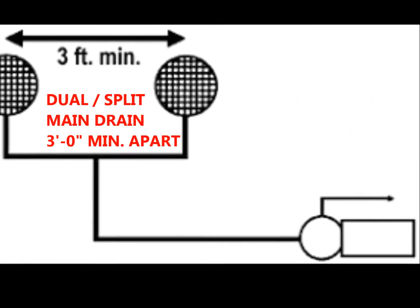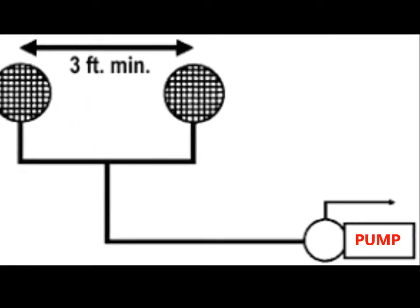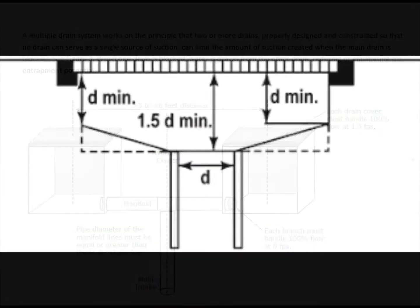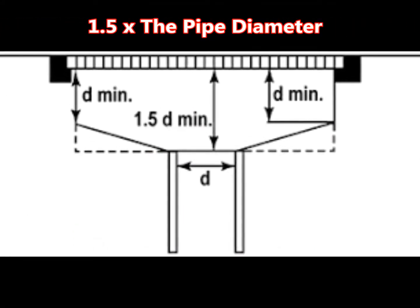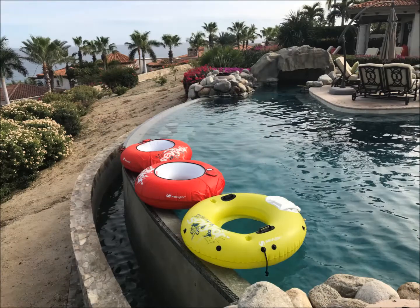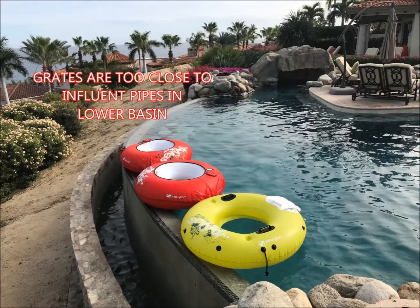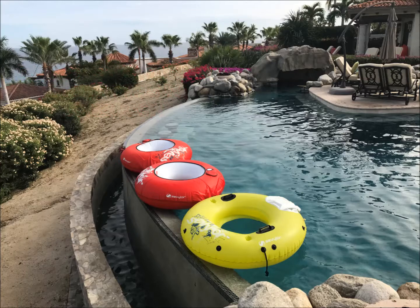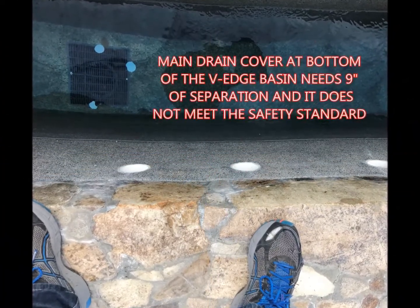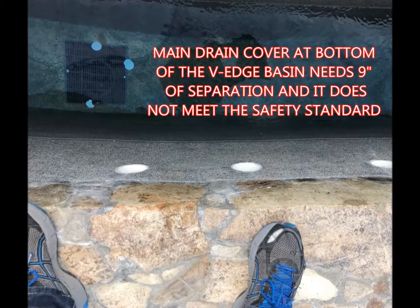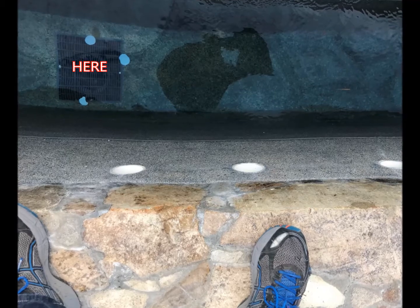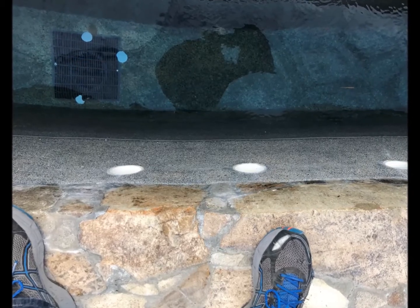Accomplishing these standards requires a collaboration between the pumping system's capability, the piping system's flow rate velocities, and the distance of separation between the influent pipe's termination point and the grate cover. The selection of drain covers must also correspond to the area of open grate space that will not allow a velocity greater than 1.5 feet per second at the prescribed influent flow rate for the dedicated pipe.